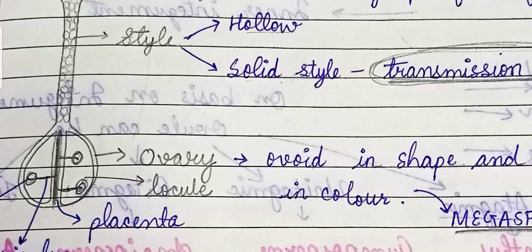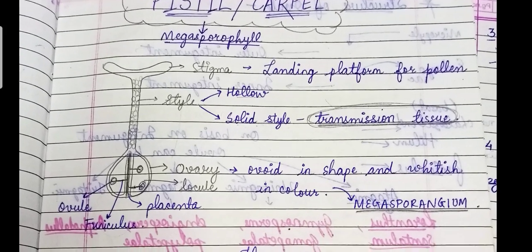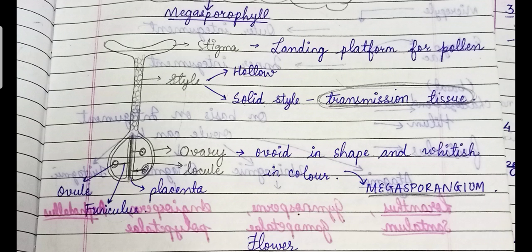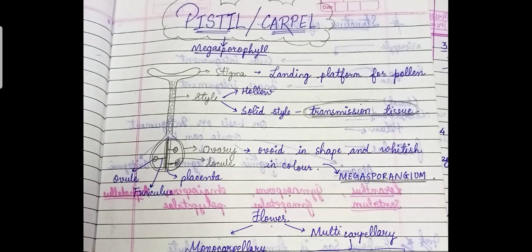The style is of two types: hollow or solid. When the pollen grain lands on the stigma surface, the secretion of specific chemicals from the tube cell — including protease-like enzymes — clears the passage toward the ovule, so that the male gamete is easily transferred to the ovary. The ovary is ovoid in shape and whitish in color, and is known as the megasporangium because the megaspores are formed within it.